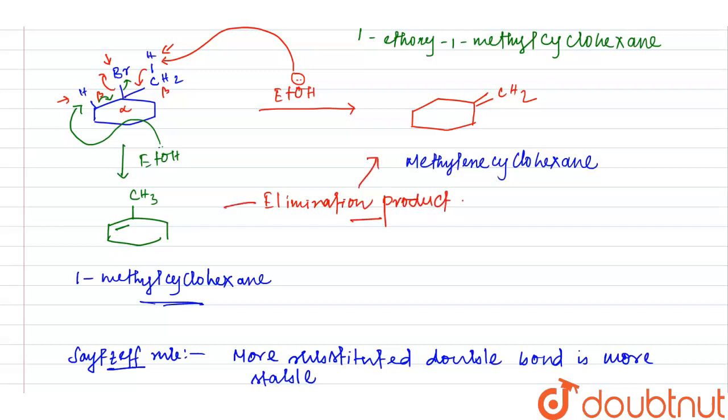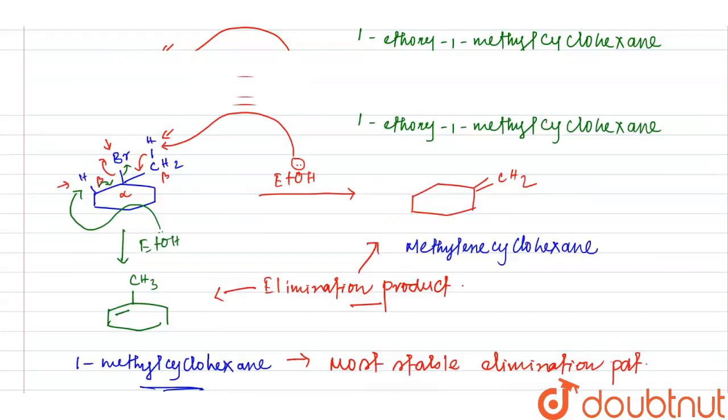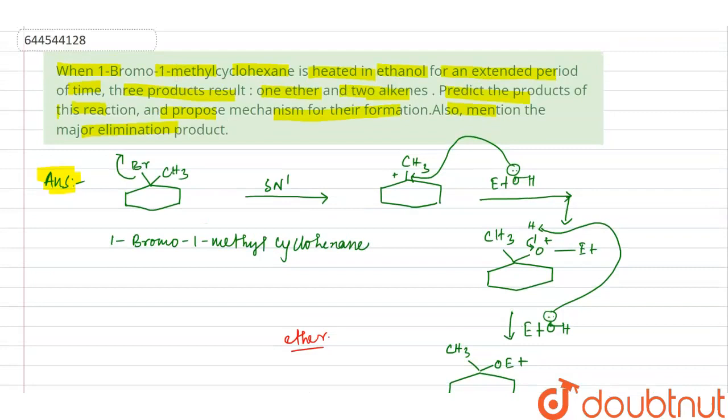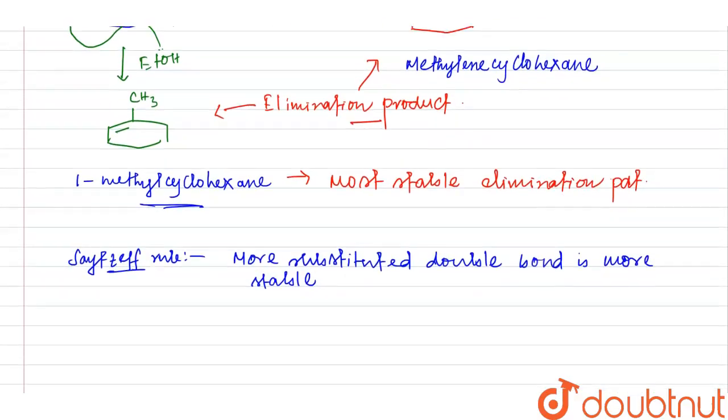These two are elimination products and this is most stable elimination product. Also mentioned the major elimination product. So the major elimination product will be 1-methylcyclohexene. Hope you understood, thank you.